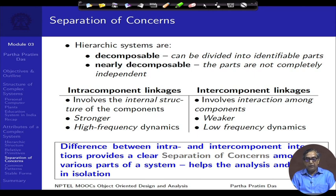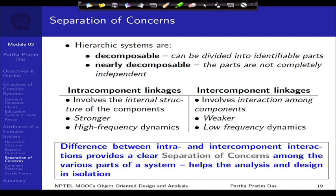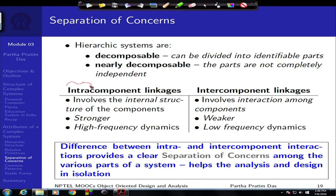If we look inside the CPU, there are different components such as the ALU, primary memory, and bus. The interconnections or inter-component linkages that exist between them are much higher compared to what exists between the CPU and the hard disk. Looking at intra-component linkage — within a component — versus inter-component linkage — across components — we will always expect intra-component interactions to be much stronger and have much higher frequency, while inter-component interactions have a much lower frequency.